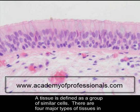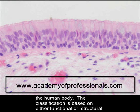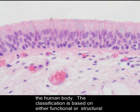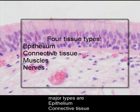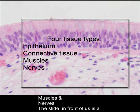A tissue is defined as a group of similar cells. There are four major types of tissues in the human body. The classification is based on either functional or structural properties of the tissue. Each tissue type can be subclassified. The four major types are epithelium, connective tissue, muscles, and nerves.